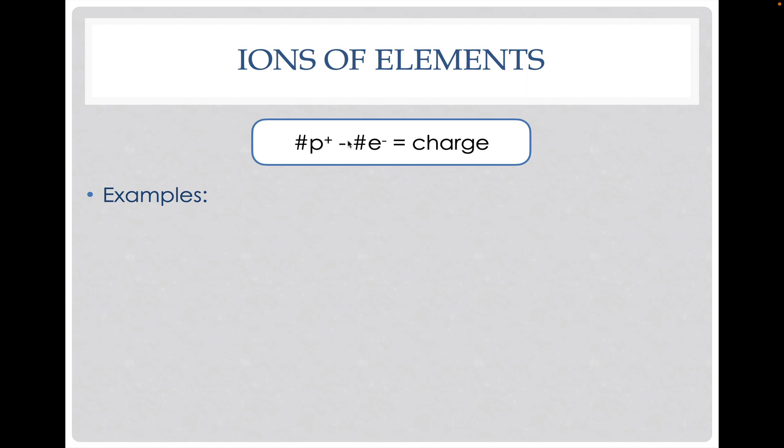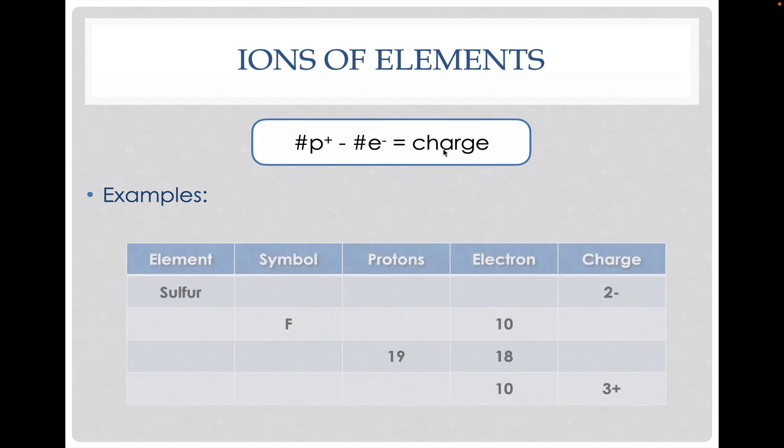So for ions, we need to have a new formula. So our protons minus our electrons will equal our charge. Again, we go back to this table, and if I have sulfur with a minus two charge, we know that sulfur has to be S and has to have 16 protons.